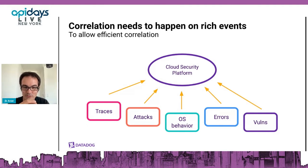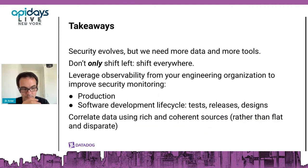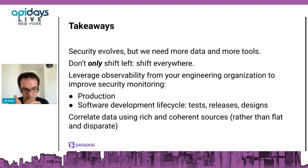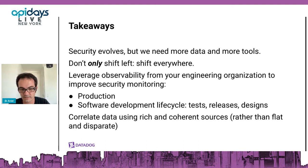I believe security will soon follow a path similar to medicine. We will have much better tooling, and the revolution is exponential. My takeaway: security is evolving, but we still need more data and more tools to help us correlate it. You don't want to only shift left — you want to shift everywhere. Each piece of information is critical. Leverage the observability from your engineering organization to improve security monitoring across the production, the software development lifecycle, and everything you have handy. This data needs to be correlated using rich, coherent sources rather than flat and disparate ones.